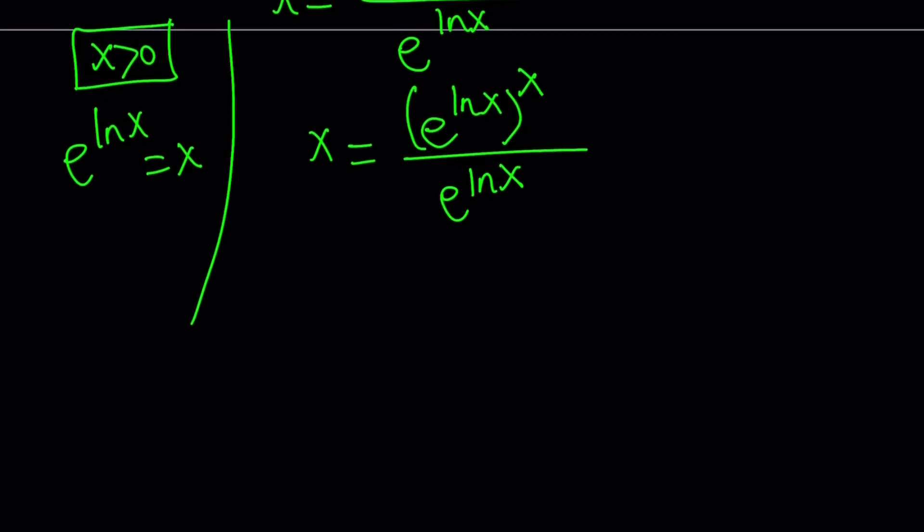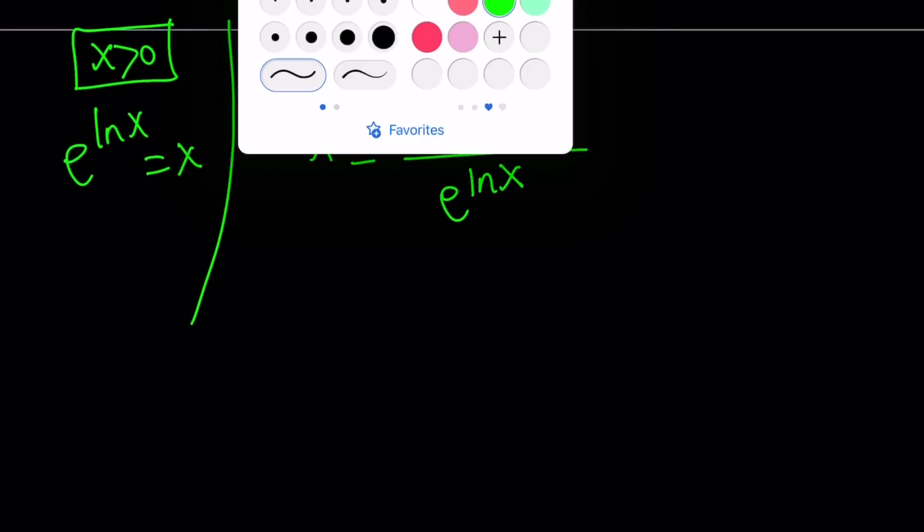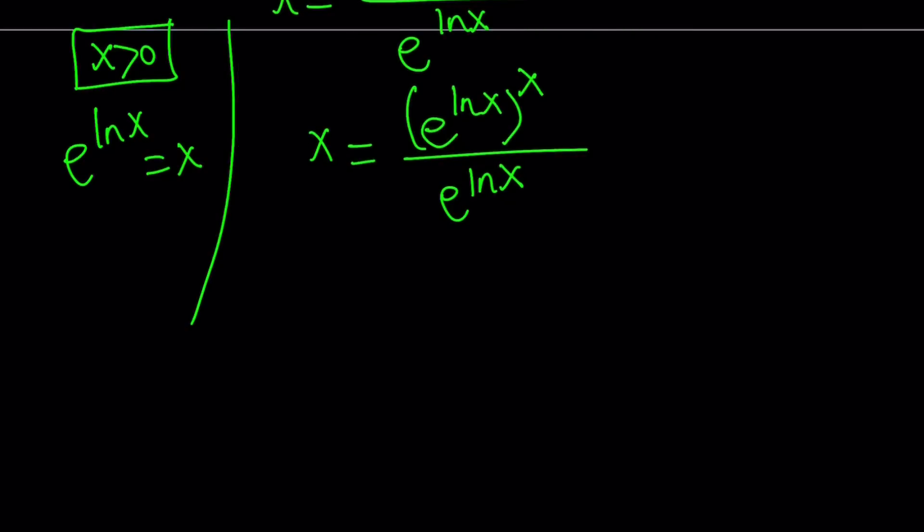Now, remembering that e to the power ln x is equal to x, this becomes x equals x to the power x divided by x. Great!